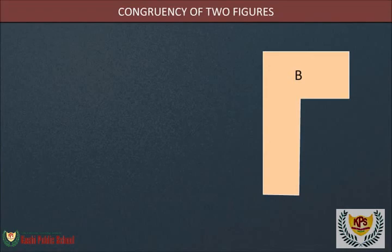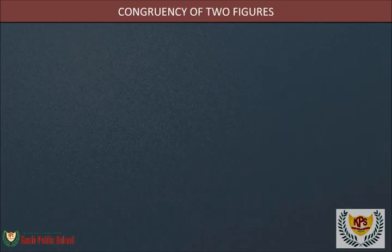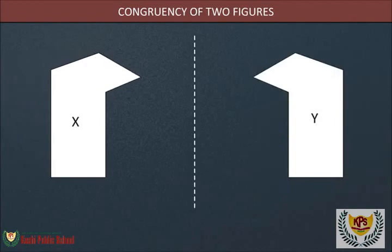Figures X and Y are congruent as figure Y is the image of figure X. Two figures are congruent if one figure lies exactly over the other after a combination of translations, rotations, and reflections.